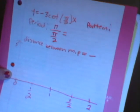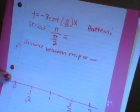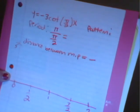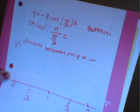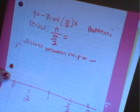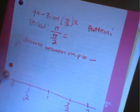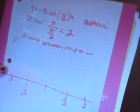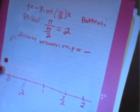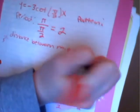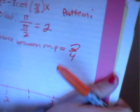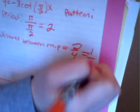We are going to graph negative 3 cotangent pi over 2x. The period is going to be pi all over pi over 2, which equals 2. The distance between major points is going to be the period, which is 2, all over 4, which equals one half.